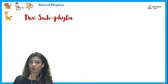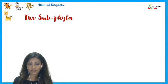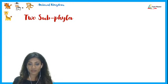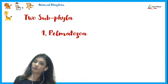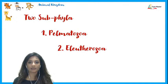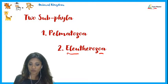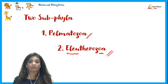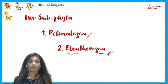Moving to classification: there are two subphyla. The first subphylum is called Pelmatozoa, and the second is called Eleutherozoa. These are the two subphyla belonging to phylum Echinodermata.